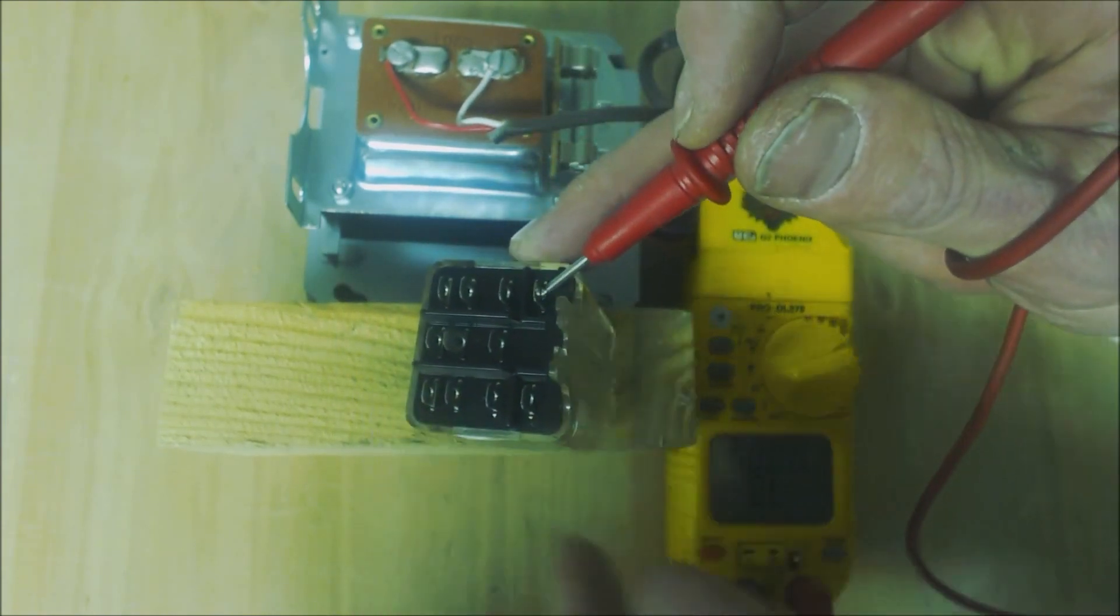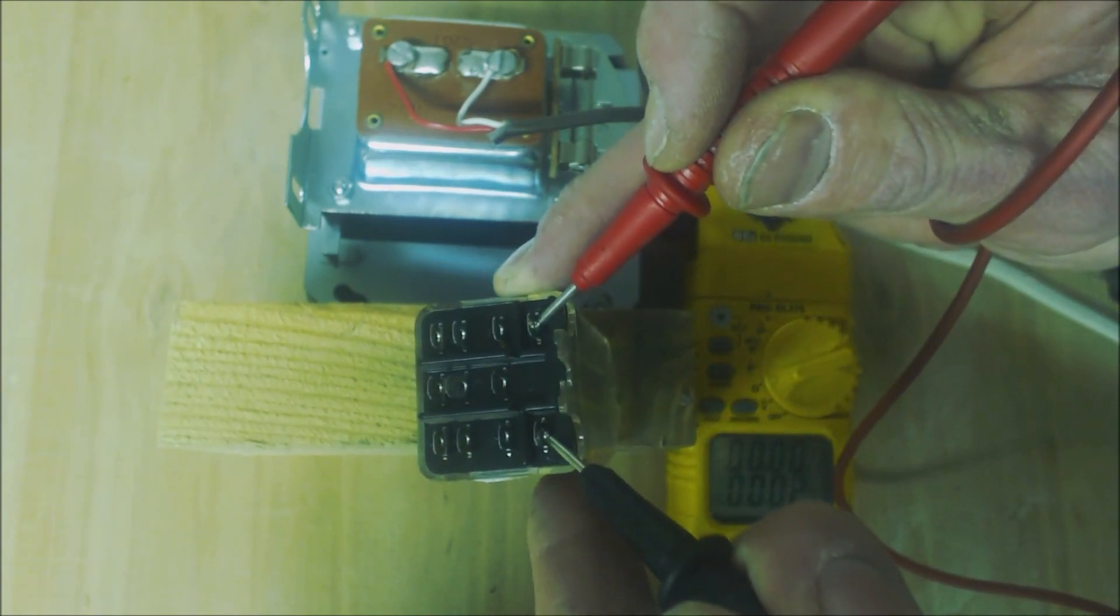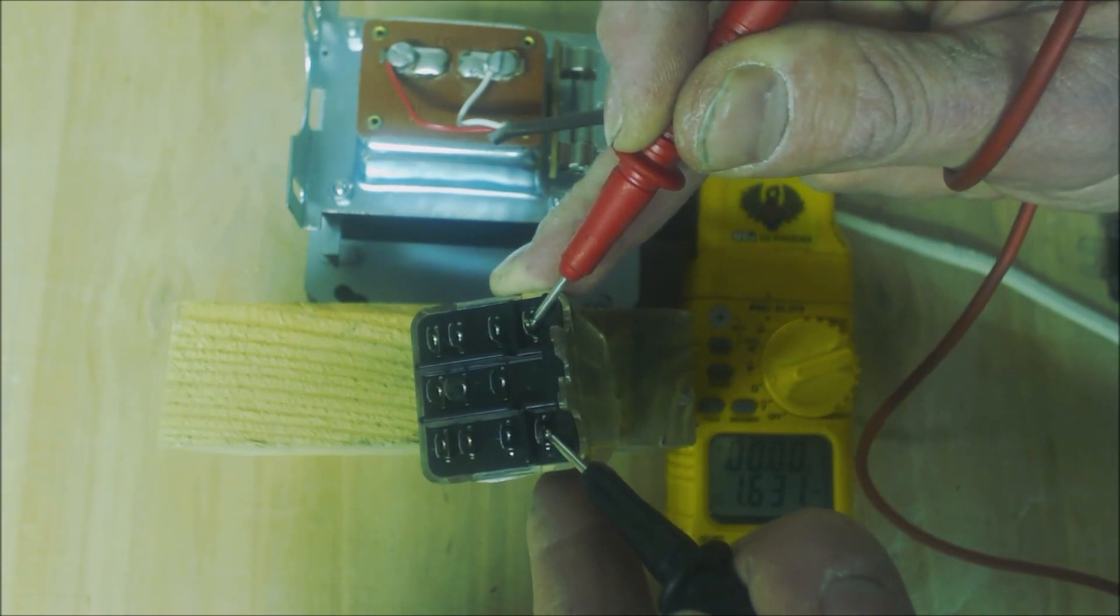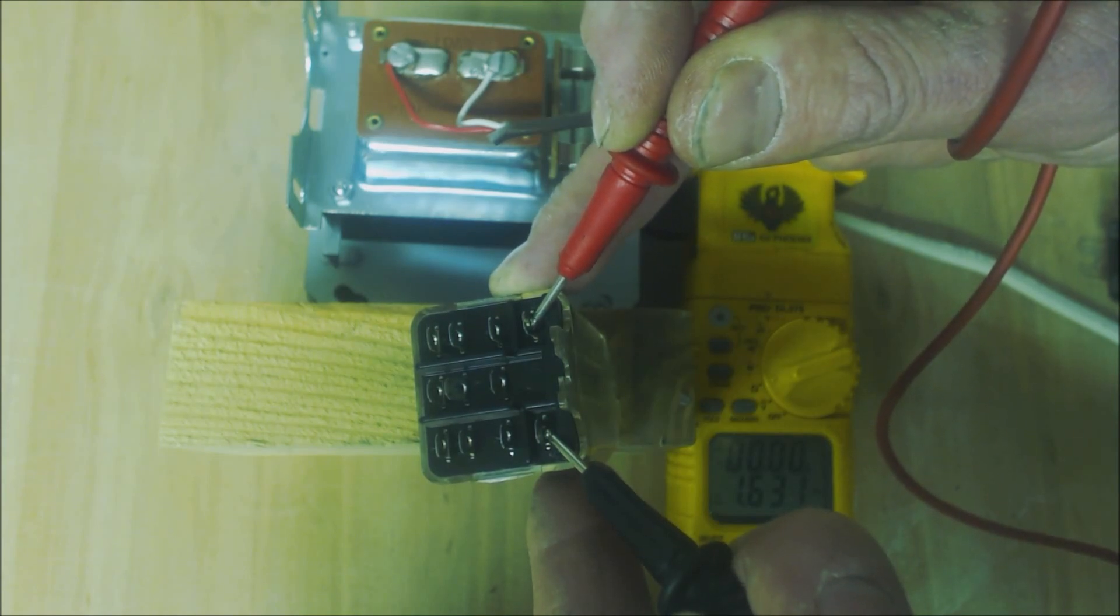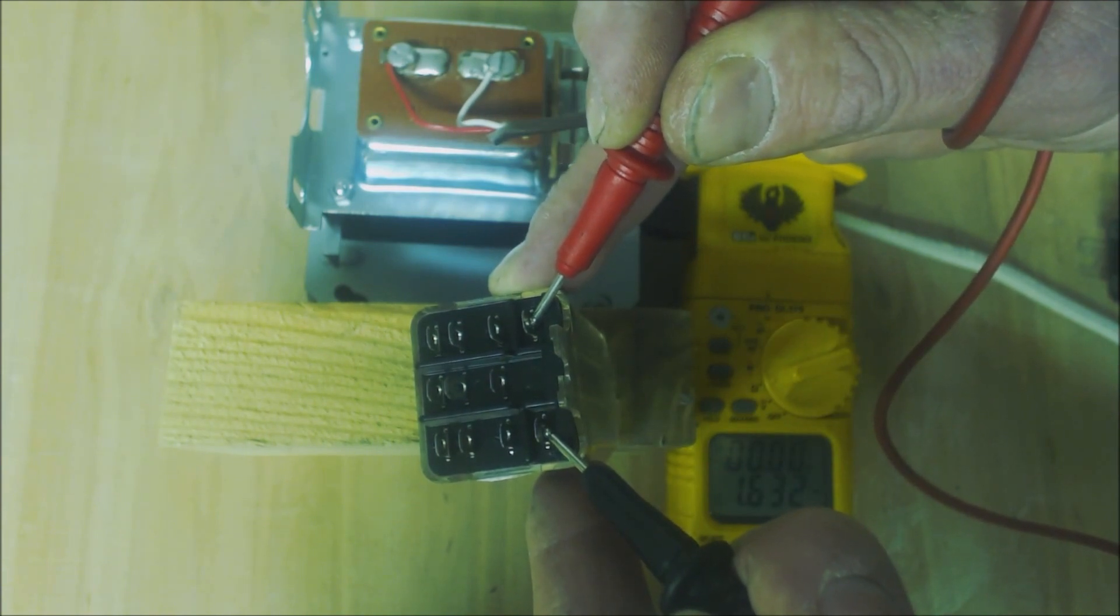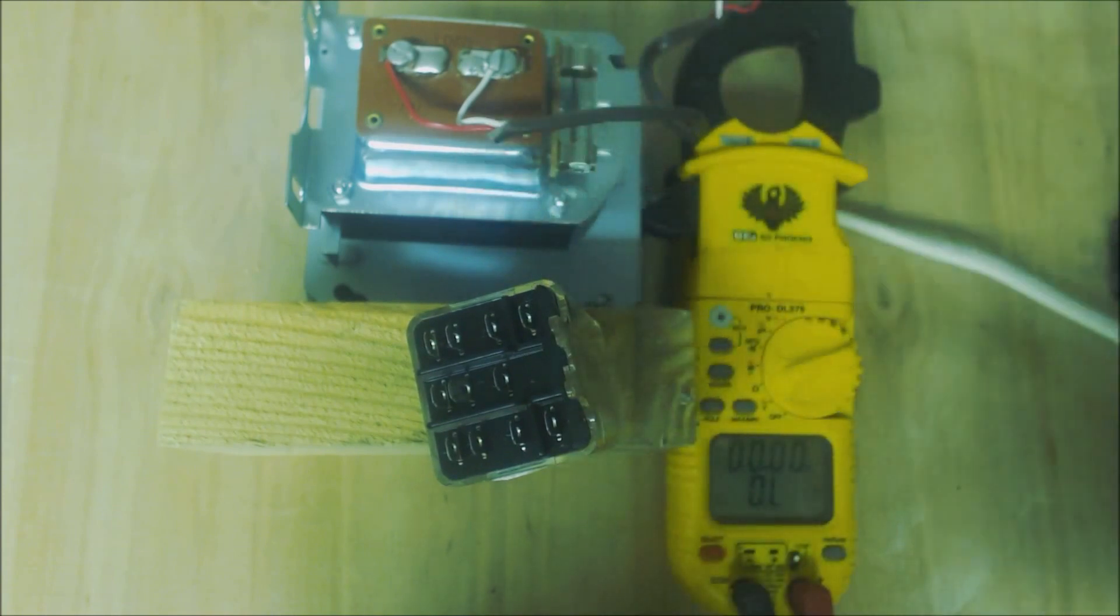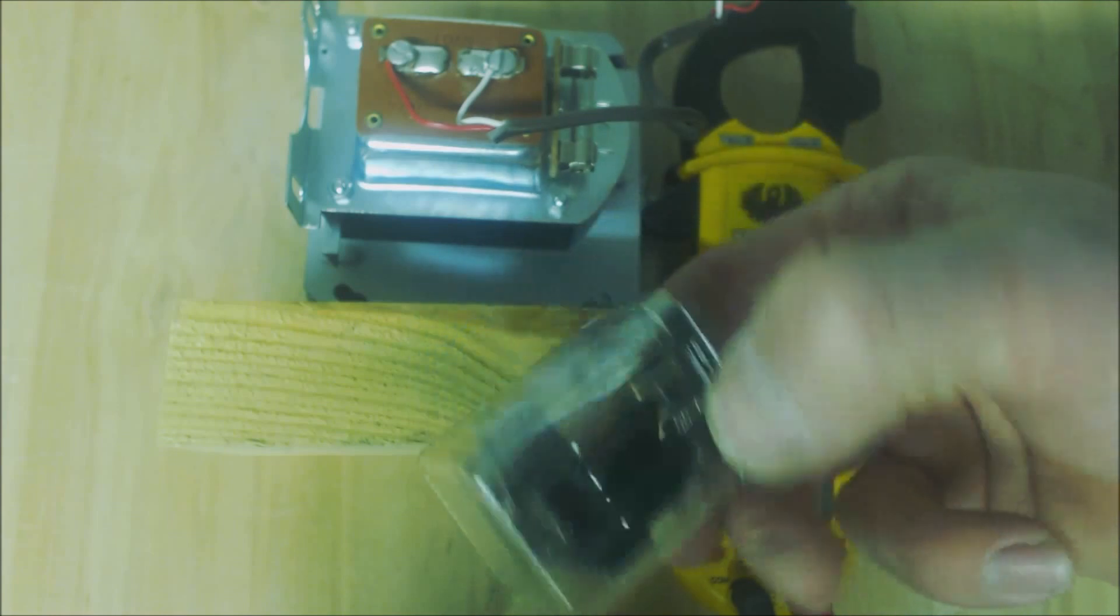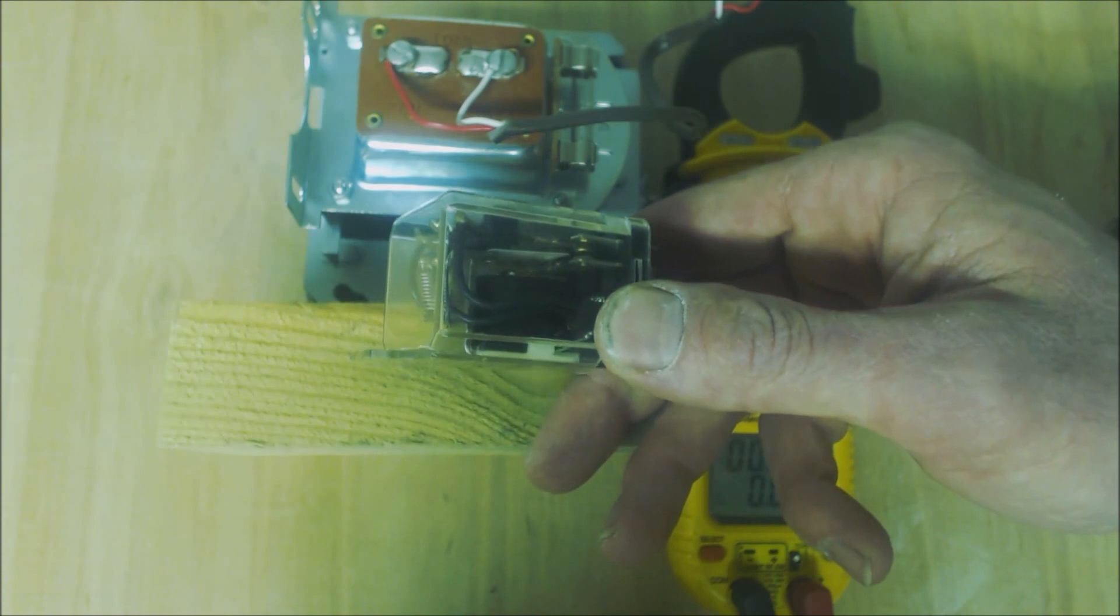Here's the 120 volt one, and we're going to test the coil. Remember the coil is closest to the mounting bracket, so it's going to be closest to where you're mounting it to the side of the furnace or the air handler. This one is 1.63 kilo ohms, so that's 1,632 ohms of resistance. It's a lot higher resistance since it's being powered with 120 volts.